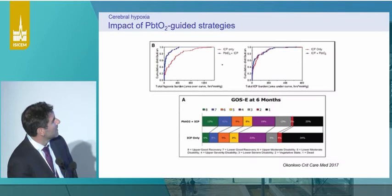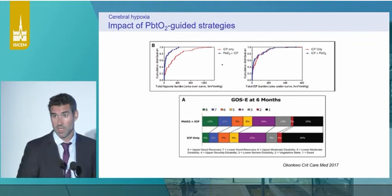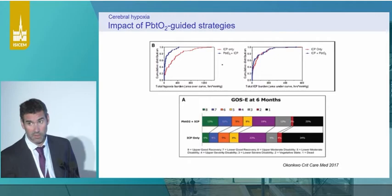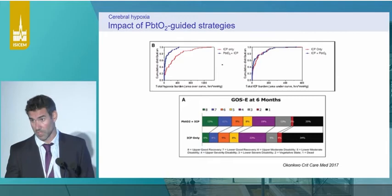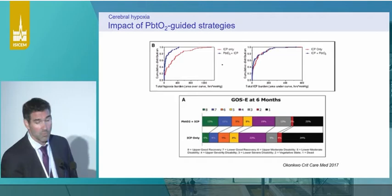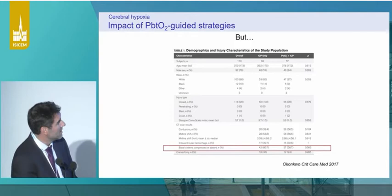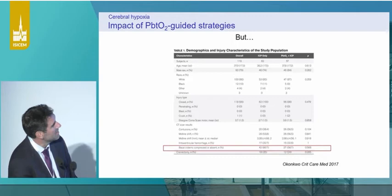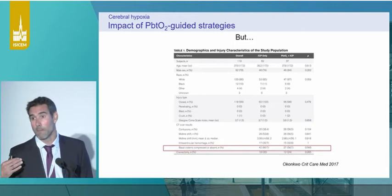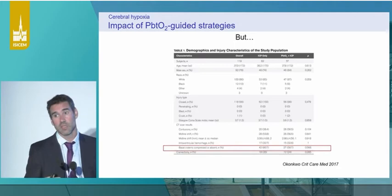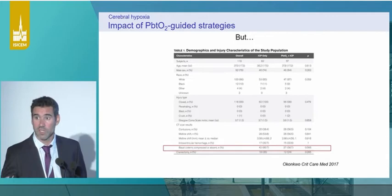What about the impact of PbtO2-guided strategies in our patients? The only RCT so far is the BOOST-2 trial, and this is a positive trial. They found that using ICP plus PbtO2 reduced the burden of brain hypoxia and also improved Glasgow Outcome Scale Extended in the patients. The favorable outcome was higher in patients treated with ICP plus PbtO2. But if you look at the details, there is a major bias — looking at the number of patients with basal cisterns compressed, there were statistically more patients with basal cisterns compressed in the ICP-only group, which may completely explain the result. The BOOST-3 trial, the story continues — it is ongoing and we hope to have results soon.